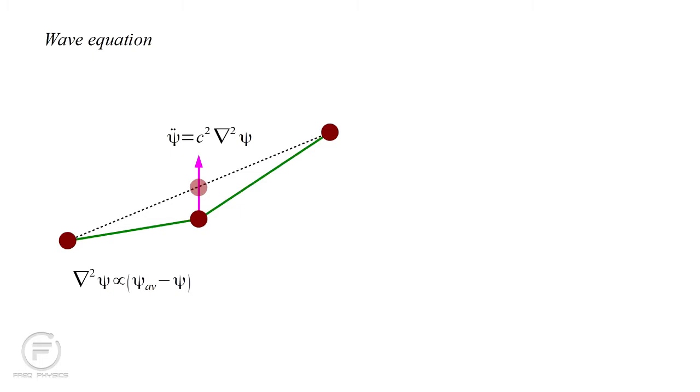We denote acceleration with two dots, and the constant of proportionality turns out to be the square of the wave velocity, c, the speed of light, or of sound, or of whatever it is we're describing.